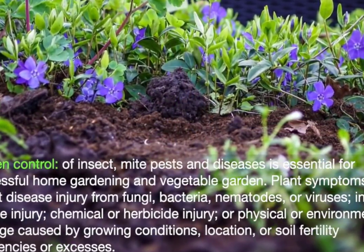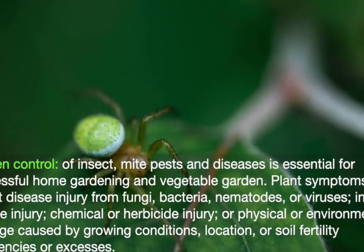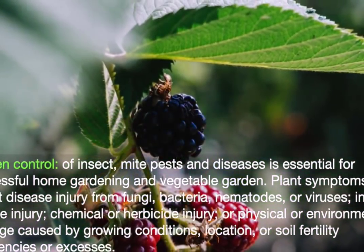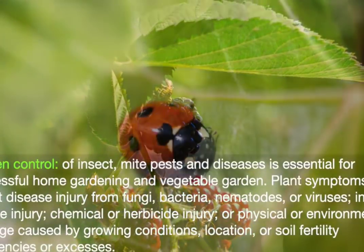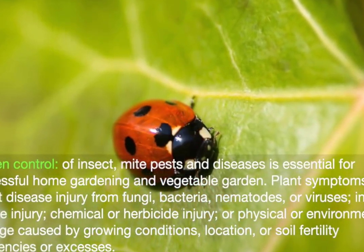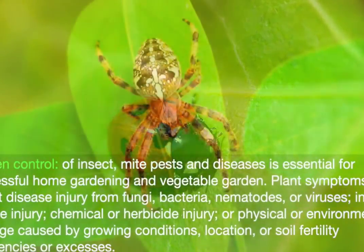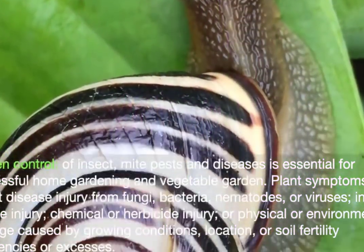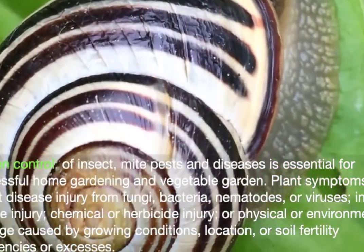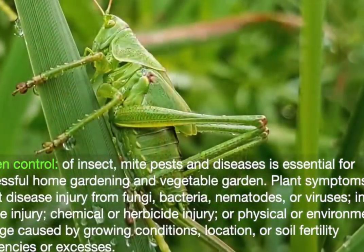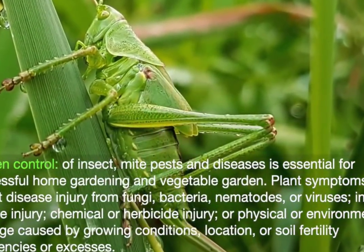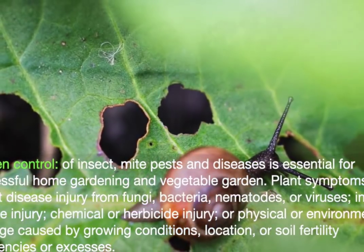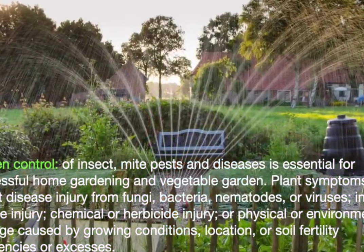Control of insect, mite, pests and diseases is essential for successful home gardening and part of general management practices for your vegetable garden. Plant symptoms might reflect disease injury from fungi, bacteria, nematodes or viruses, insect or mite injury, chemical or herbicide injury, or physical or environmental damage caused by growing conditions, location, or soil fertility deficiencies or excesses.